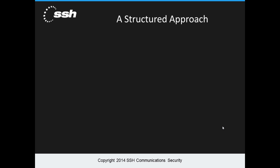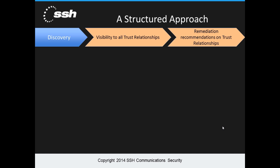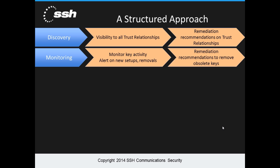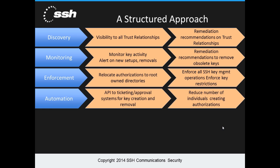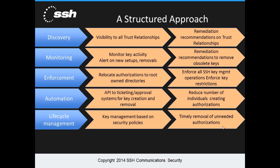This is a general approach for how our customers can use UKM to remediate their environment. UKM has the ability to discover what trust relationships currently exist in an environment. It can monitor key activity, giving you better insight as to how authorizations are being used, which in turn can take away from the guessing game as to whether a key can be removed or not. Relocating keys to centrally owned locations puts more control back into the hands of your admins. Tying in internal access and change request procedures, making the automation of key creation possible, will eliminate errors and rework. And if a user or application ID is removed, you can pull all keys associated with that account and remove them.